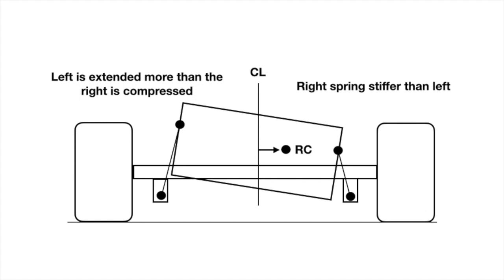Now let's say the right side spring is stiffer than the left — say we put a 250 on the right rear and a 175 or 150 on the left rear. That would technically, when the car rolls, extend the left more than it compresses the right, and move the elastic roll center towards the right of the car. Everything shifts — you can picture it moving the roll center to the right, and the car rolling more on the left and less on the right.